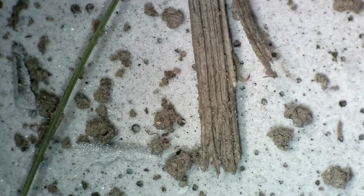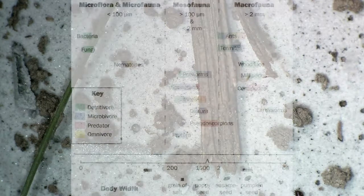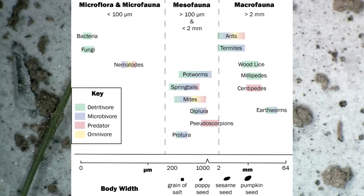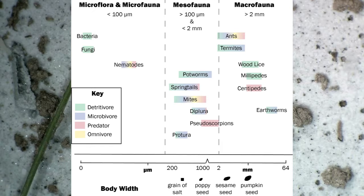Soil mesofauna is a term that describes the animals found in the soil that range in size from 100 micrometers to 2 millimeters, which is comparable to the size of a grain of sand. Due to their small size, the fauna that make up this group are easy to overlook, however they play an important role in soil ecosystems.